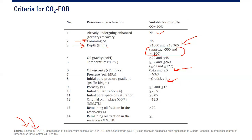The ninth criterion is porosity, with a quite wide range of 3% to 37%. Even low-porosity reservoirs can still be candidates for this technology. The tenth criterion is initial oil saturation, which should be above 26.5% — because you want as much oil as possible in the reservoir in the first place.